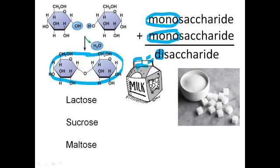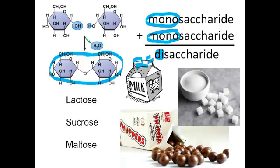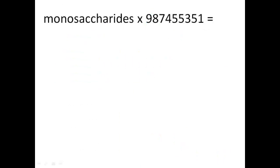Maltose is found in sugar cane sap and it's also used when making malted barley for beer or when making malted milk balls. But your cells don't stop there. If they were to take a whole bunch of monosaccharides and add them together, they would make what's called a polysaccharide, poly meaning many.